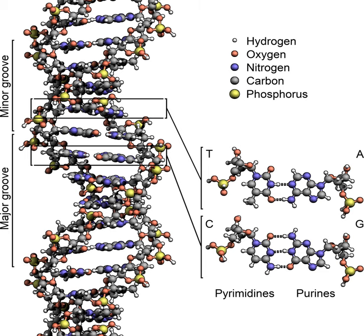In transcription, the codons of a gene are copied into messenger RNA by RNA polymerase. This RNA copy is then decoded by a ribosome that reads the RNA sequence by base pairing the messenger RNA to transfer RNA, which carries amino acids. Since there are four bases in three-letter combinations, there are 64 possible codons, four to the power of three combinations. These encode the 20 standard amino acids. Most amino acids, therefore, have more than one possible codon.